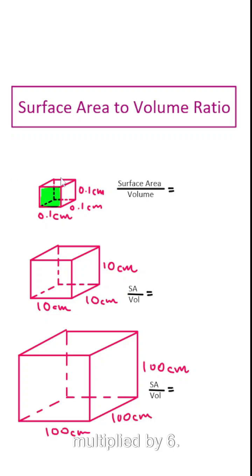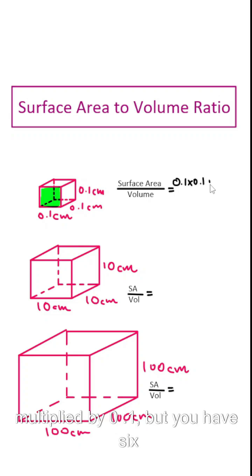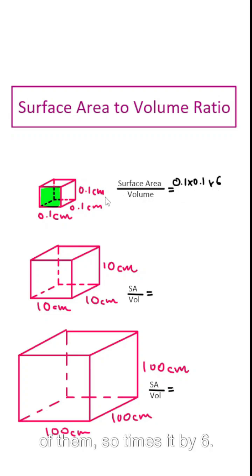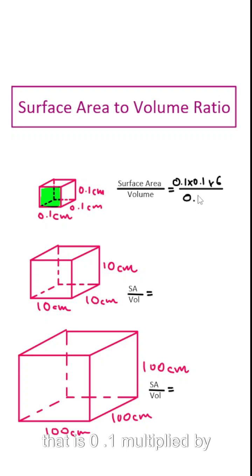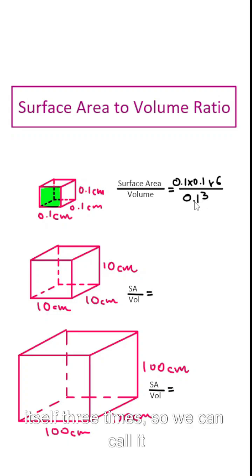Let's find the area of one side and multiply it by six because a cube has six sides. So one side is 0.1 multiplied by 0.1, but you have six of them, so times it by six, divided by volume, which is length times width times height. That is 0.1 multiplied by itself three times, so we can call it 0.1 cubed.